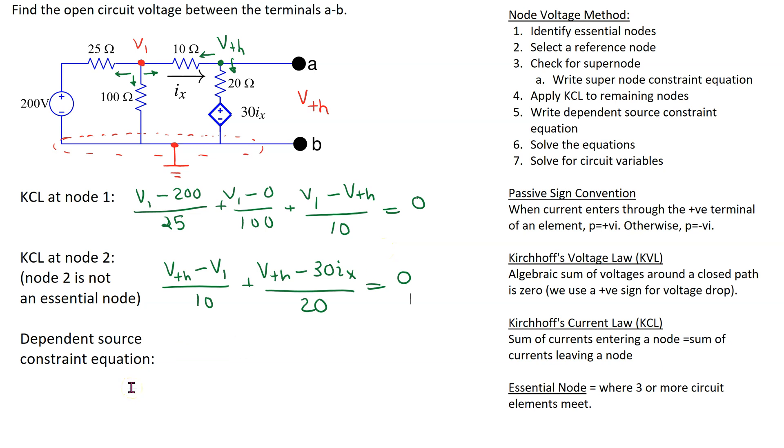Finally we need to write the dependent source constraint equation. So we need to relate the variable Ix which is controlling the magnitude of the dependent source to the node voltages. Ix is the current through the 10 Ohm resistor in this direction. So Ix is given by V1. We follow the direction of Ix. So this end is at higher potential. This end is at lower potential. Thus we get V1 minus Vth over 10.